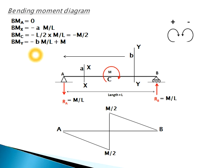At point Y, Ra again creates an anticlockwise effect, giving −b·(M/L). But at point Y (which is to the right of C), the applied clockwise moment M also acts, contributing +M. So bending moment at Y = −b·(M/L) + M.